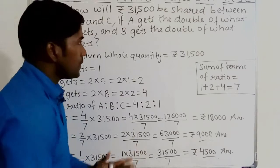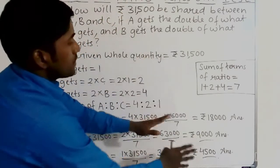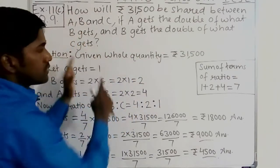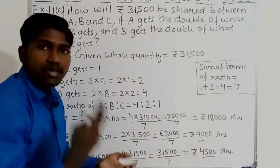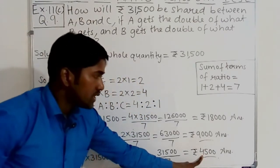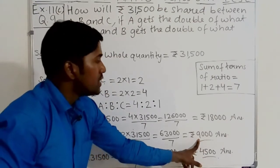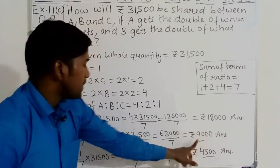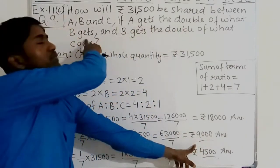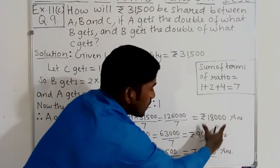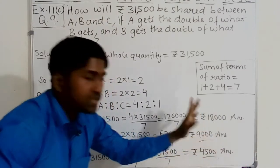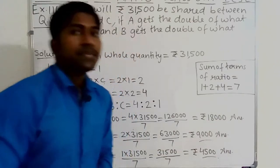Verification: B should be double of what C gets — 4,500 into 2 is 9,000, which is B's share. And A should be double of what B gets — 9,000 into 2 is 18,000, which is A's share. That means these answers are correct.